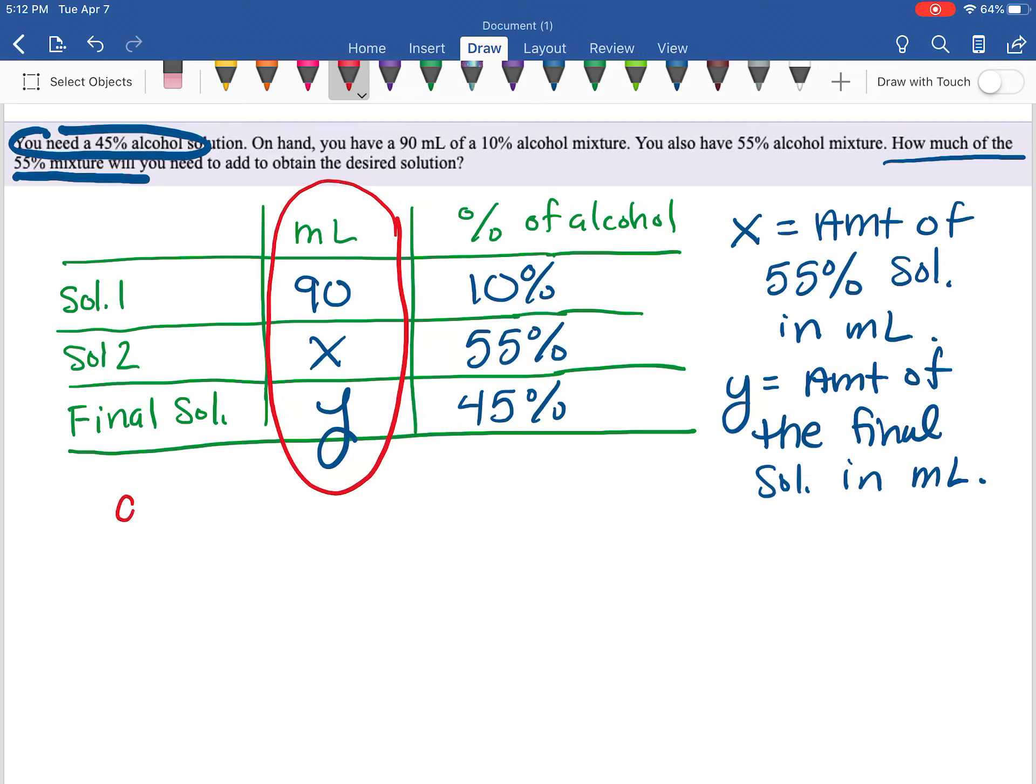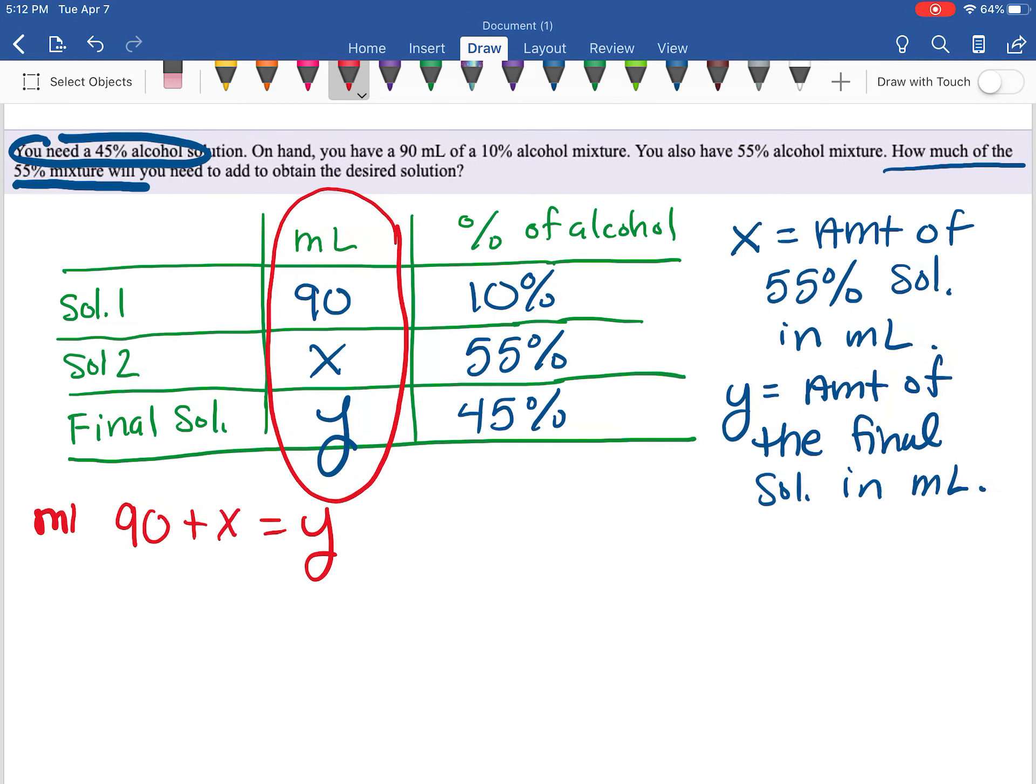If I add up the amount of all my solutions, I should get a total of y because I'm going to add solution one, solution two, and when I add those up I should get the amount y. So that's going to be my first equation: 90 plus x equals y, and that is the equation that represents the amount of milliliters.